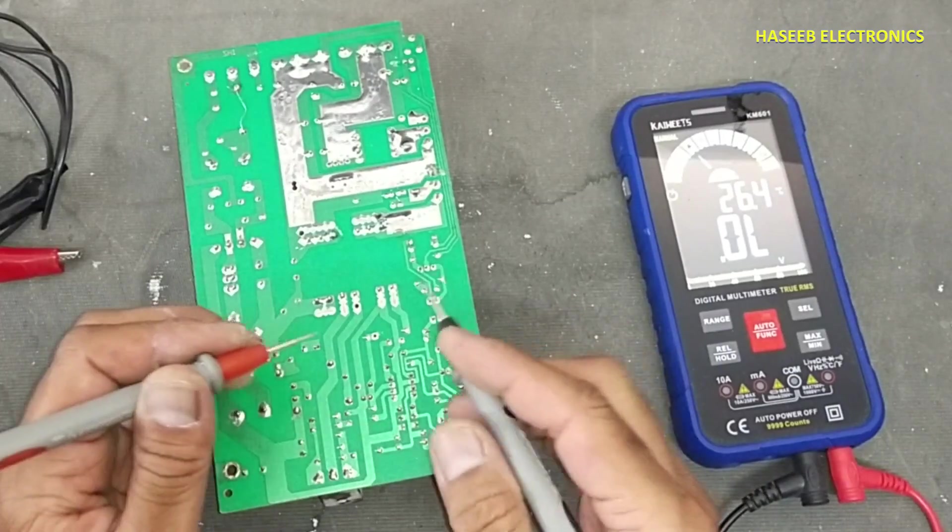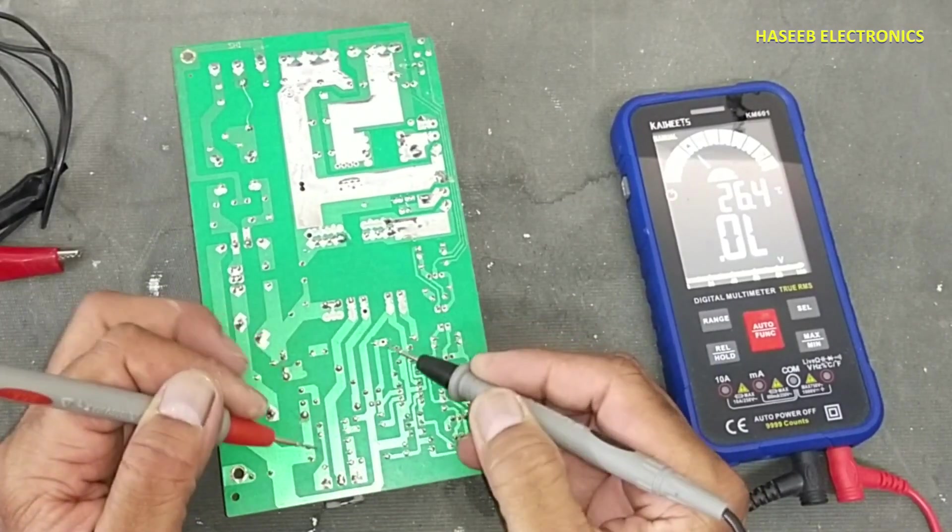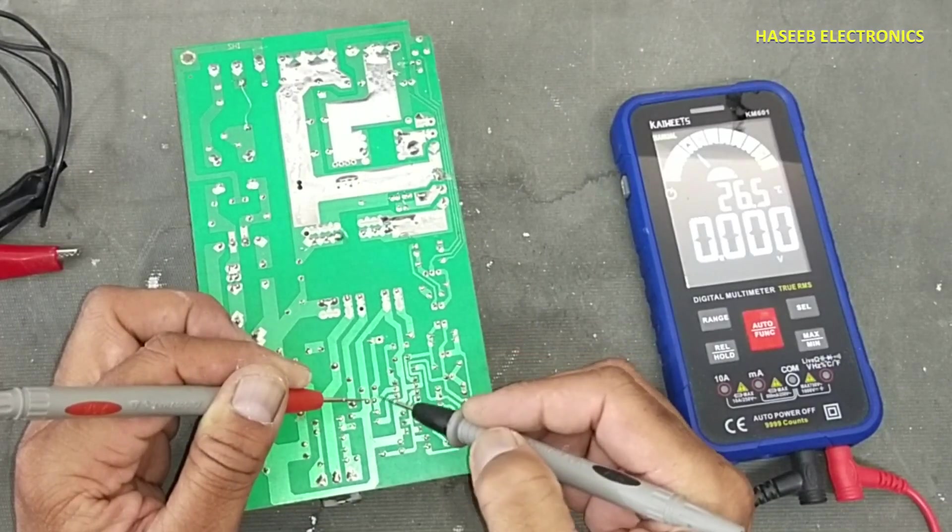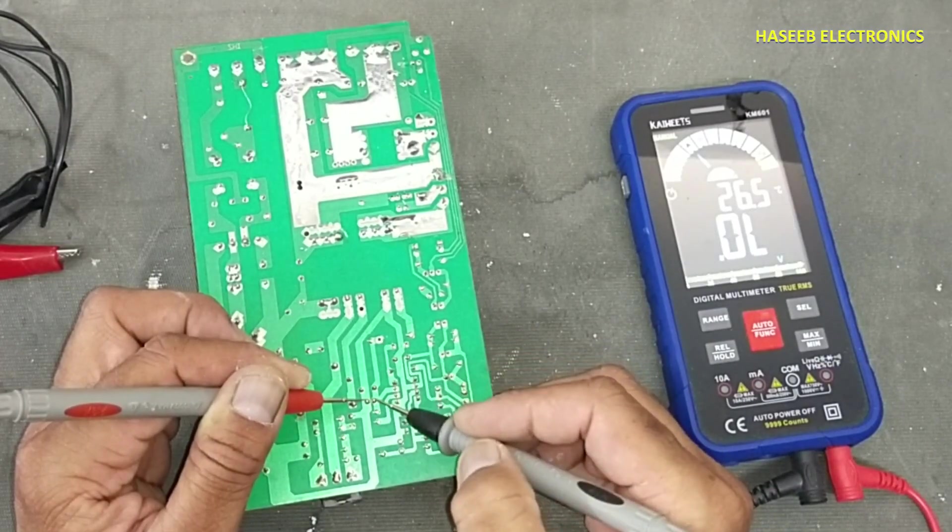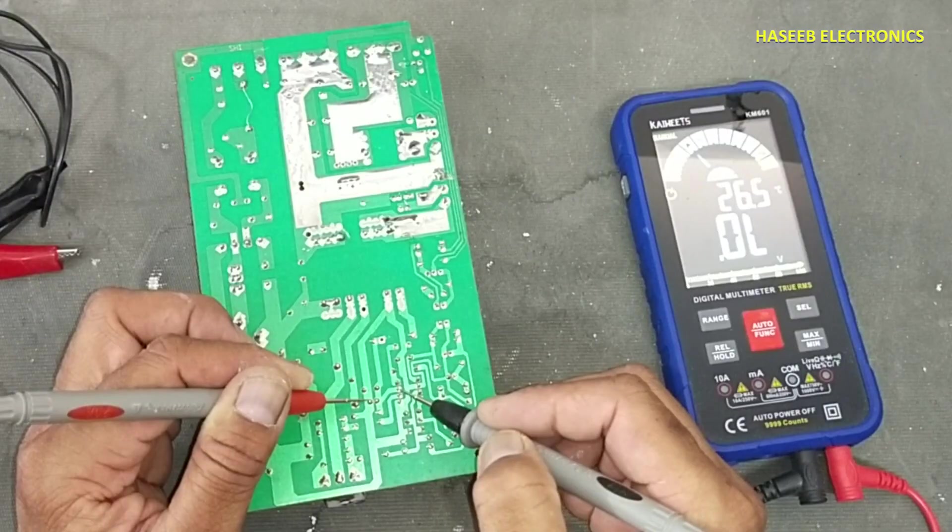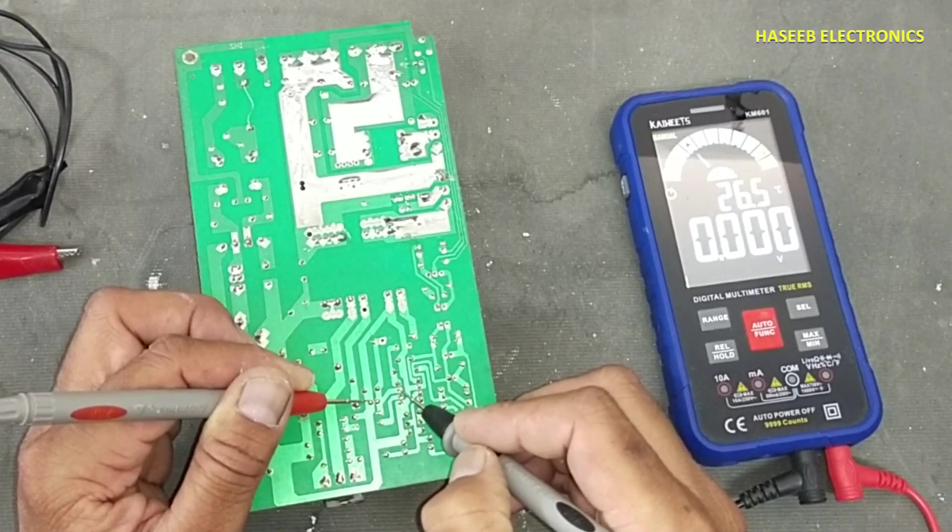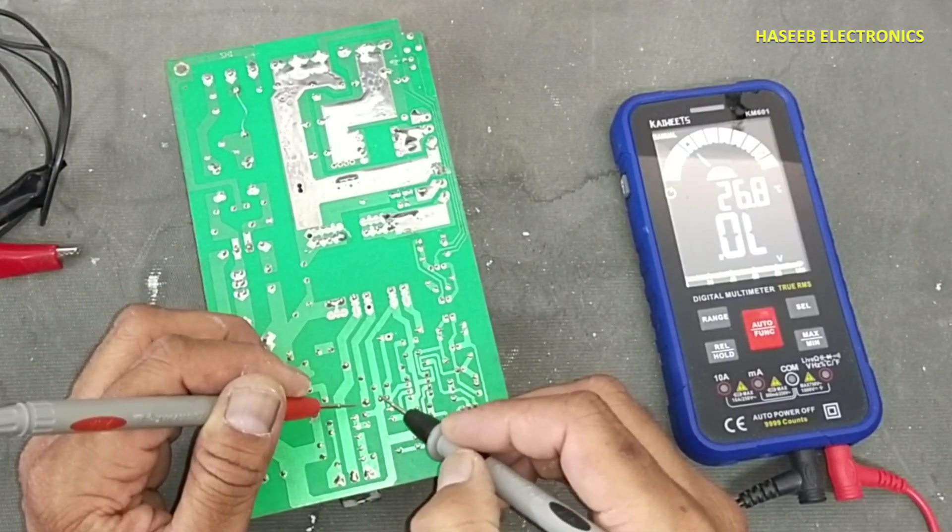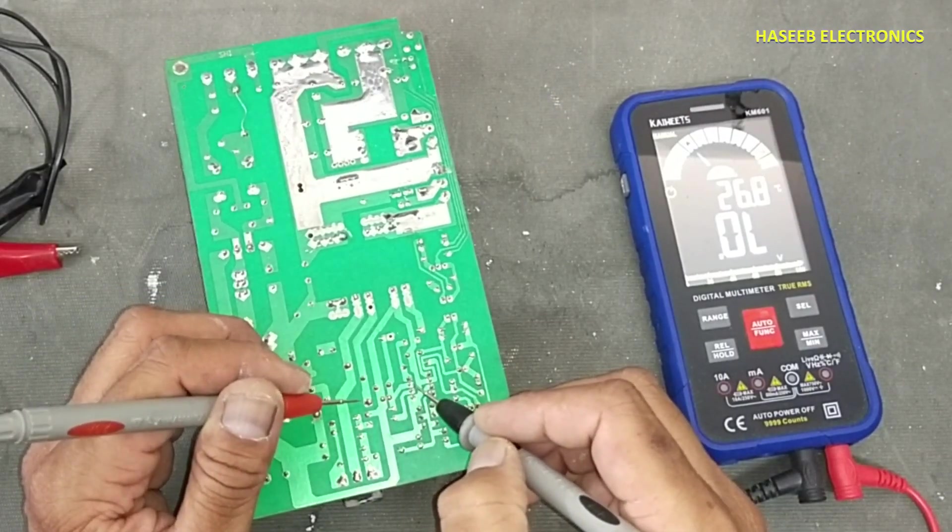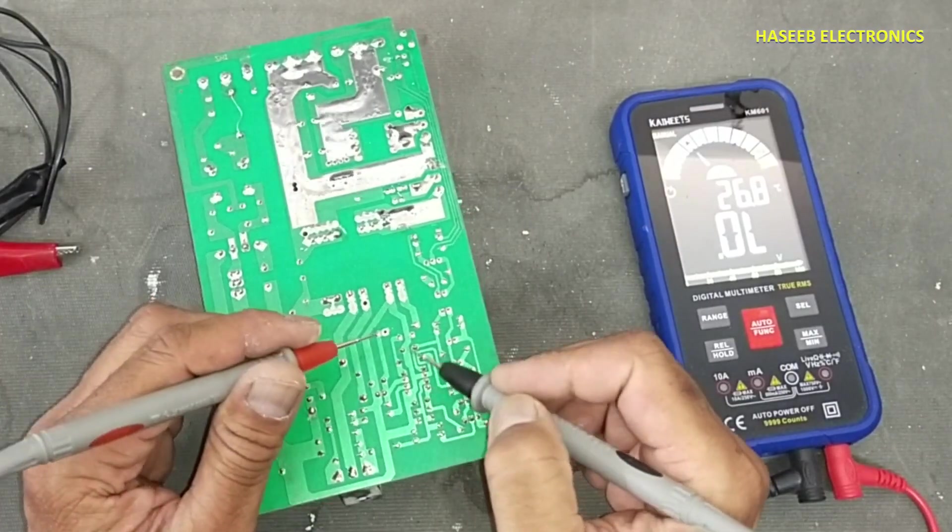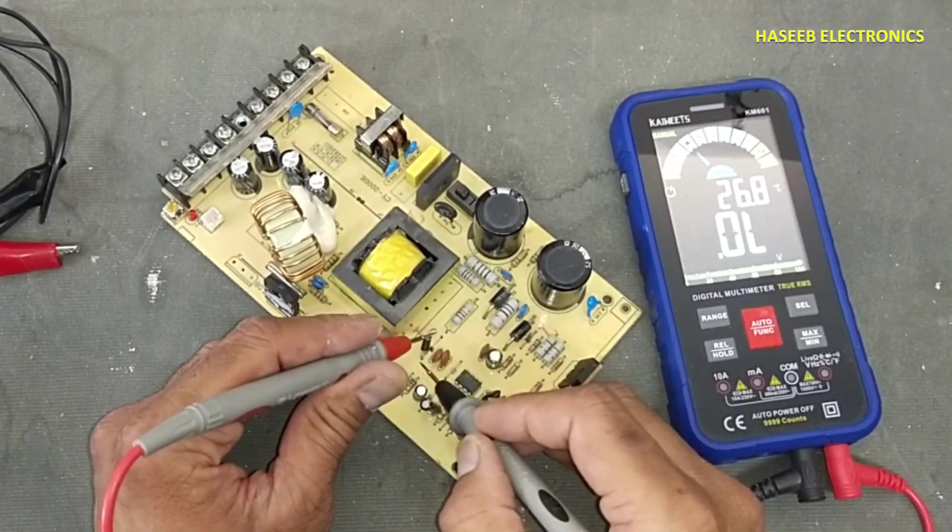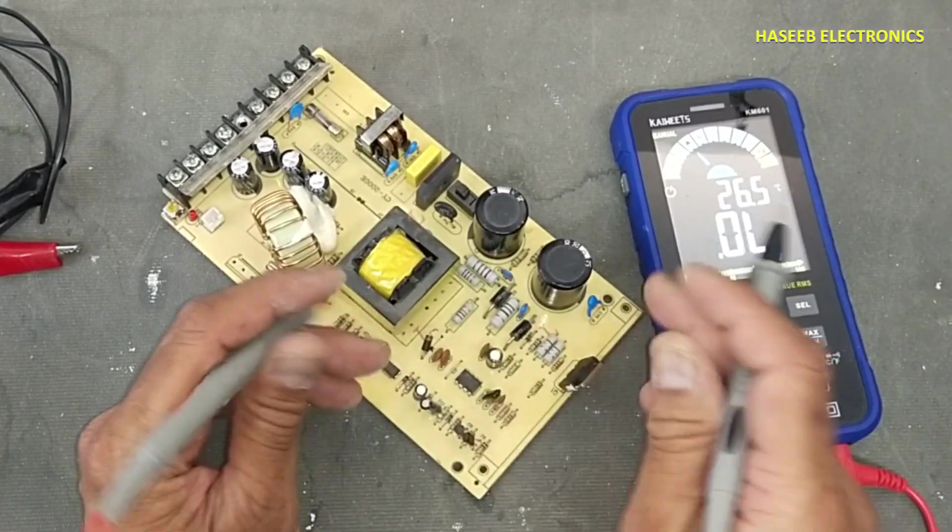I removed diode from this point and now we will check between these two points. That's really wonderful, we have short circuit at pin number seven VCC pin. Maybe this capacitor is short circuit or IC is short circuit. Because when I removed this diode, this diode is good. That means we have short circuit at this point.